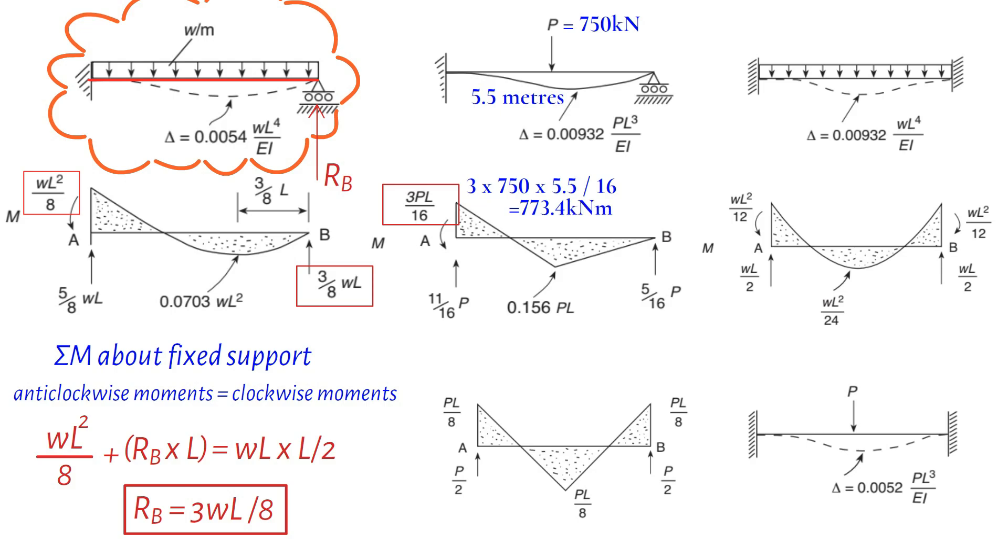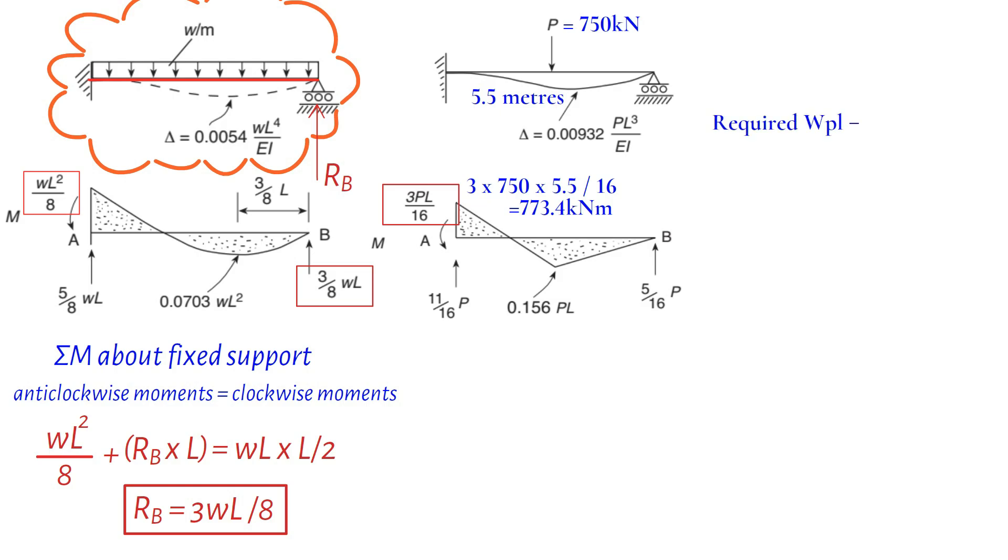Next, considering the yield stress of mild steel, which is 275 MPa, we can determine the required plastic modulus from the provided equation. By replacing the numerical values, we find the required plastic modulus to be 2812 cm³.